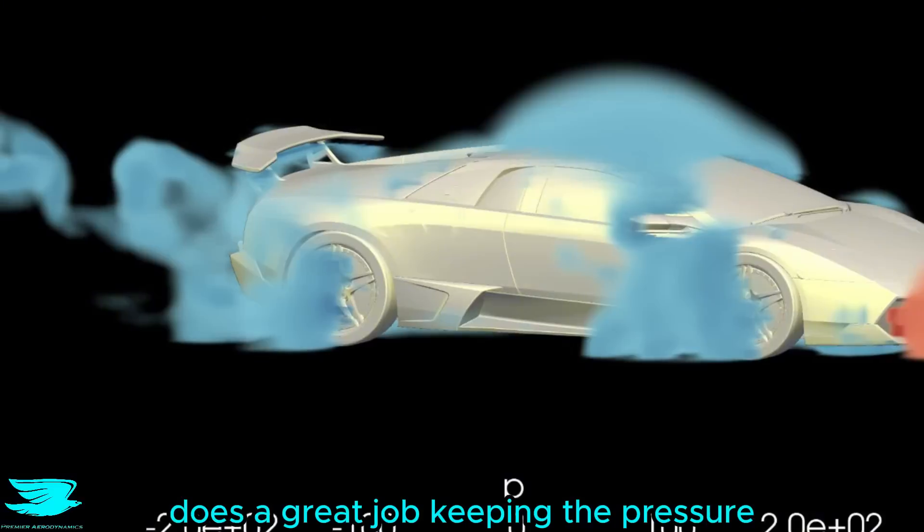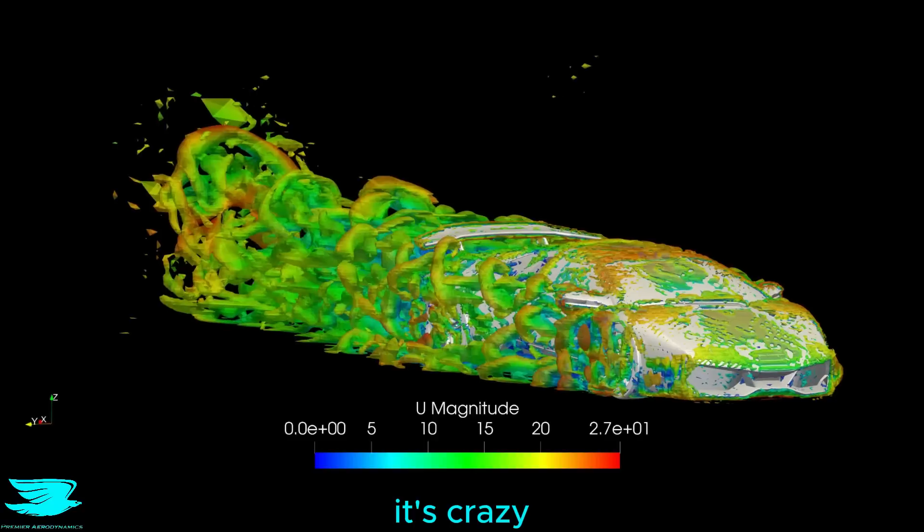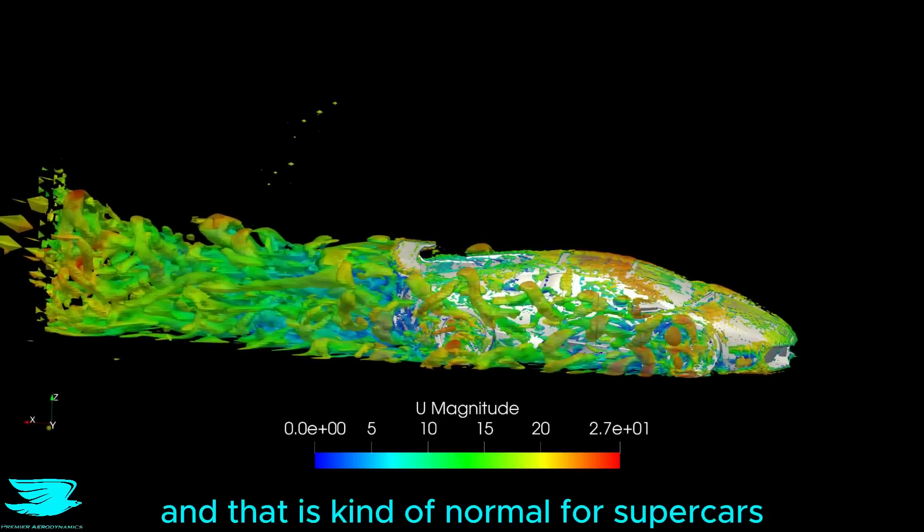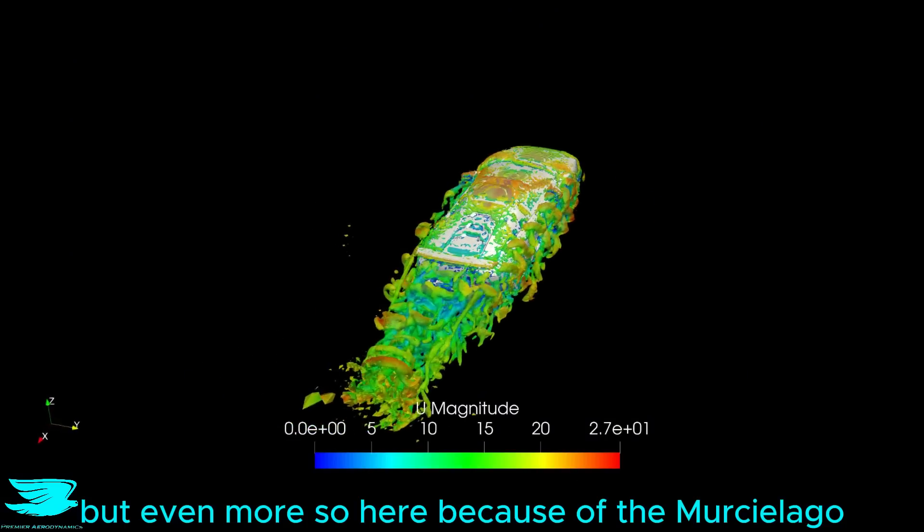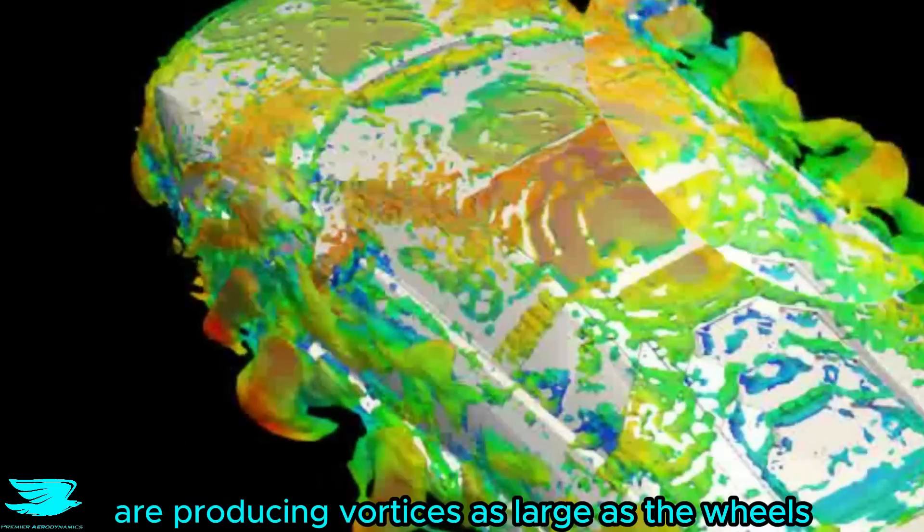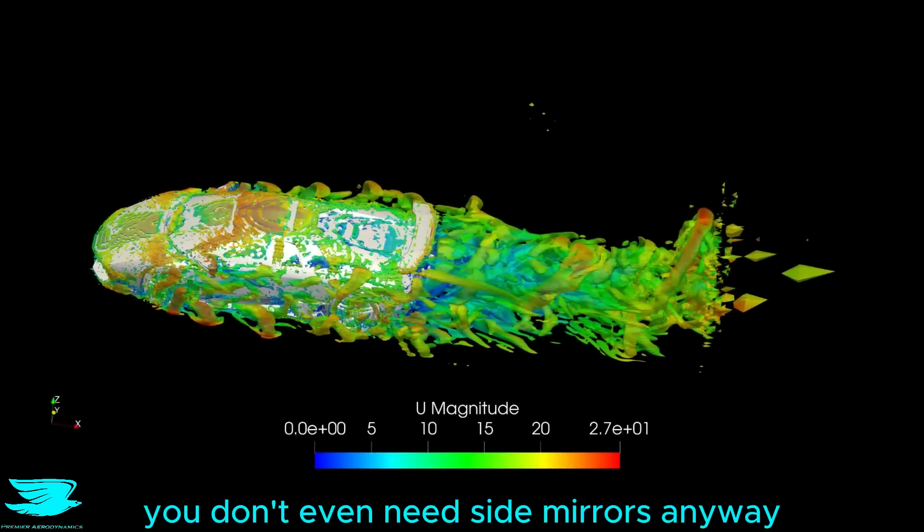But while the Murciélago does a great job keeping the pressure drag down, from this video, we see just how many vortices there are, it's crazy. That means the Murciélago has so much vortex drag, and that is kind of normal for supercars because of the extreme styling, but even more so here because of the Murciélago. I mean, just look at the side mirrors. They themselves are producing vortices as large as the wheels, and given how fast the Murciélago is, you don't even need side mirrors anyway.